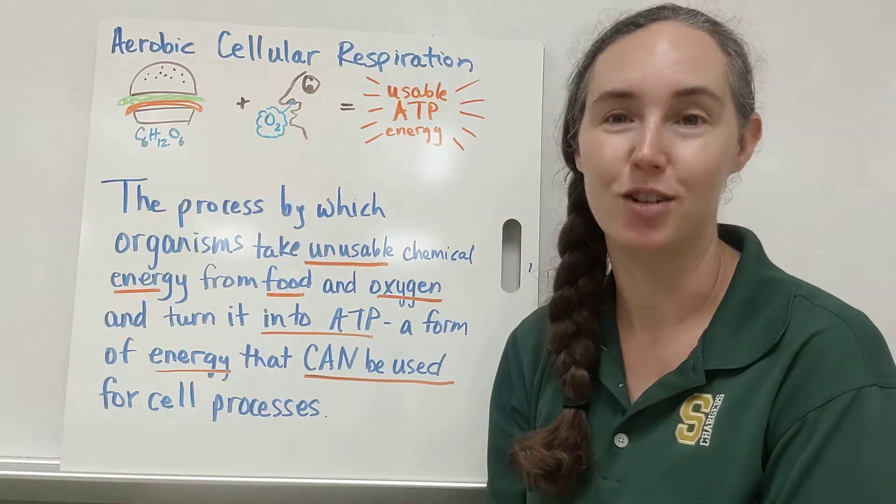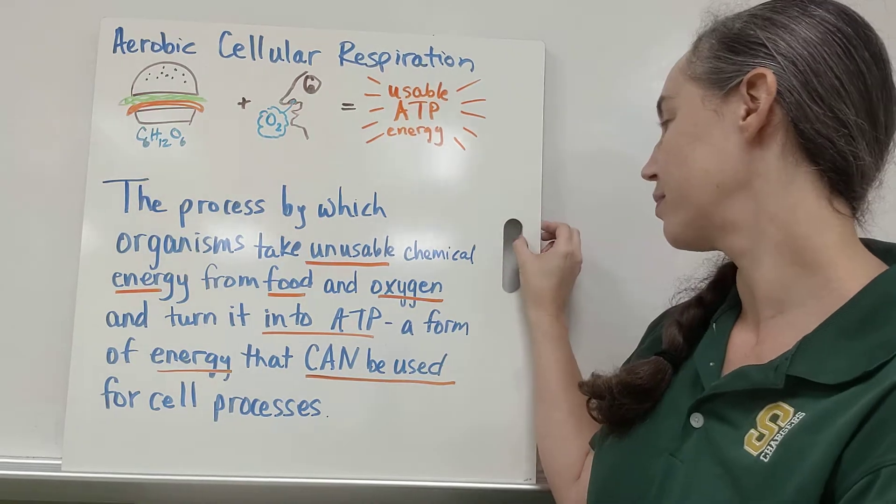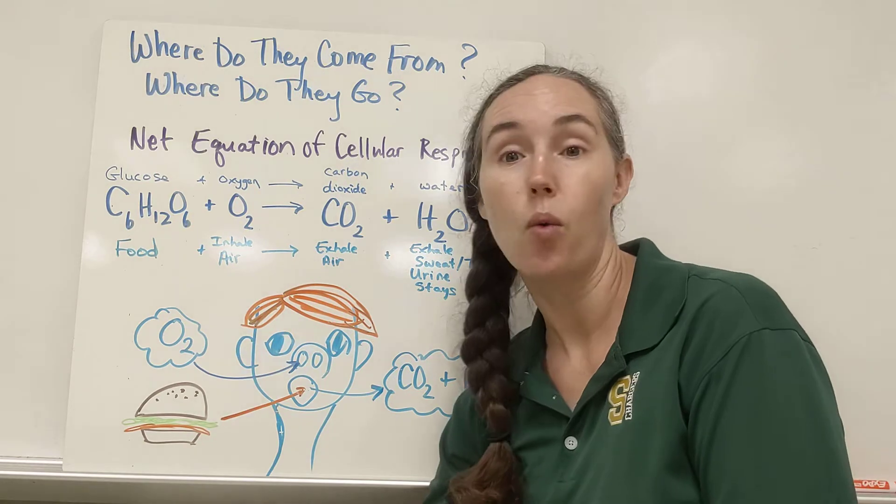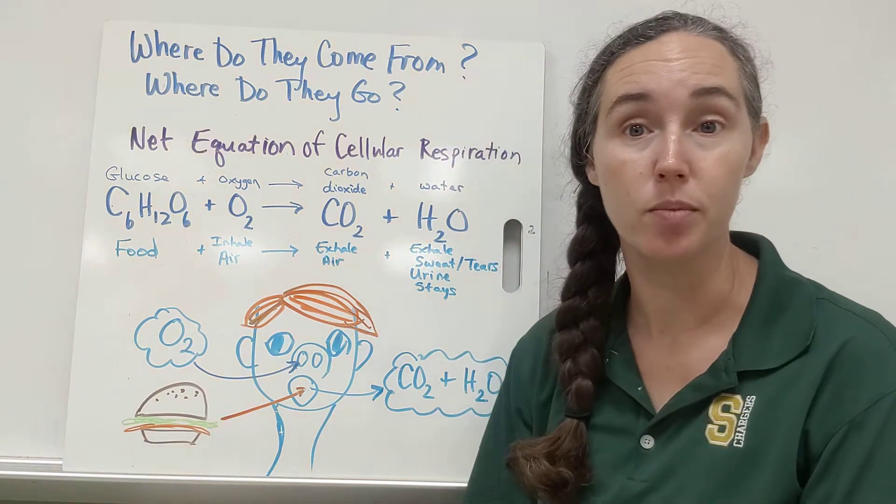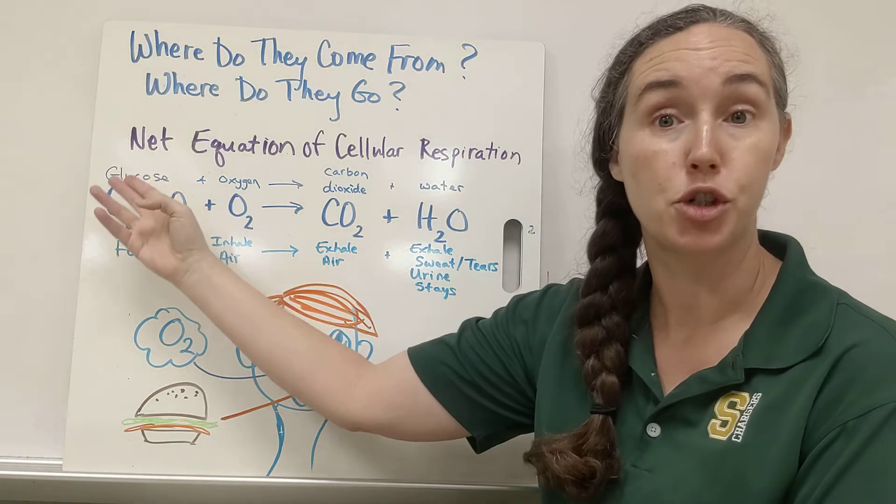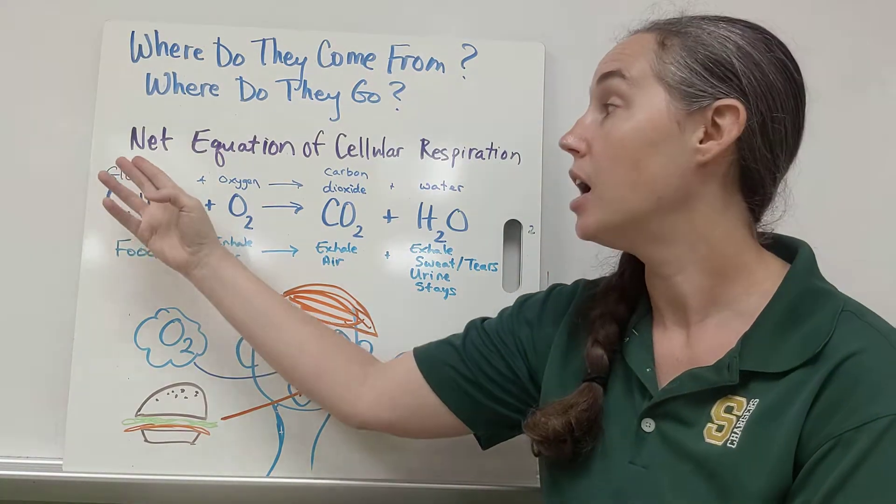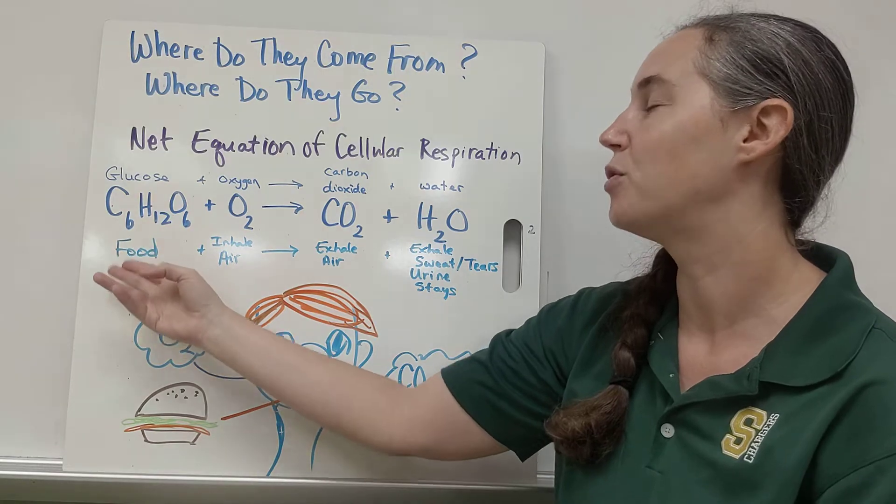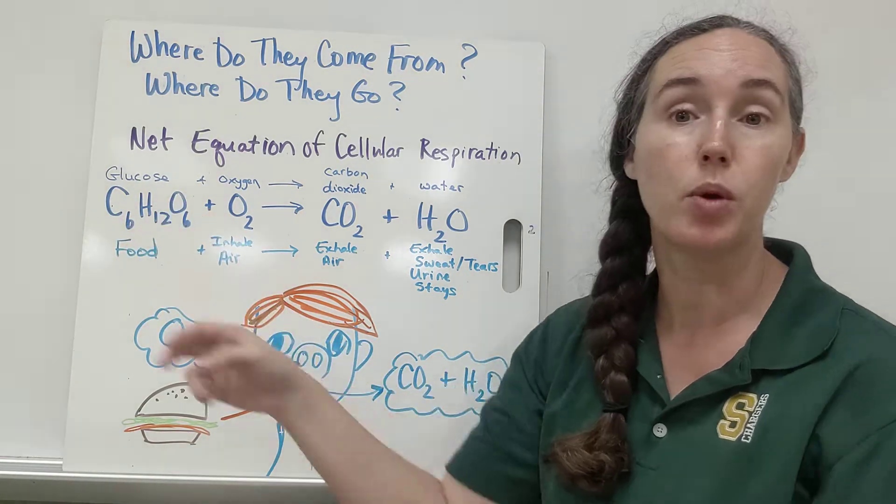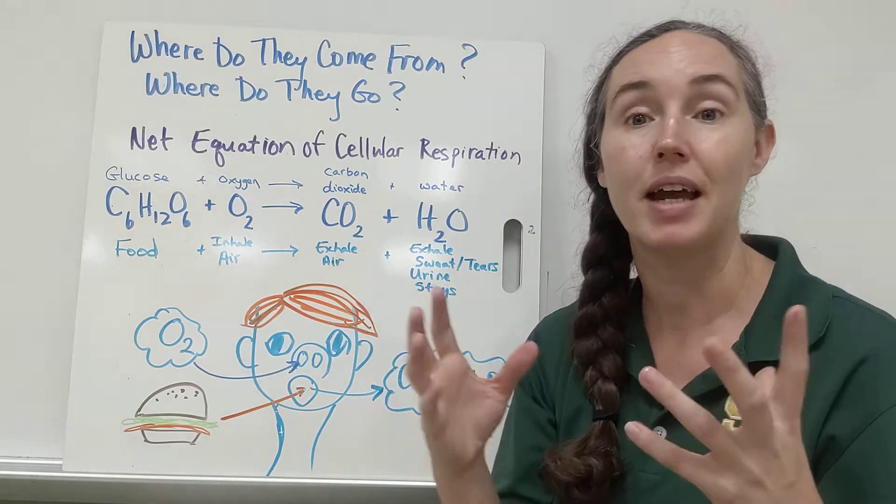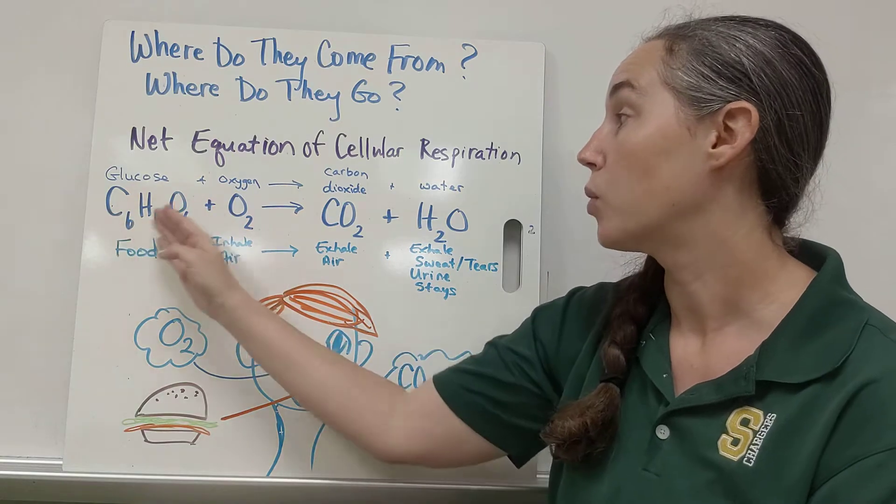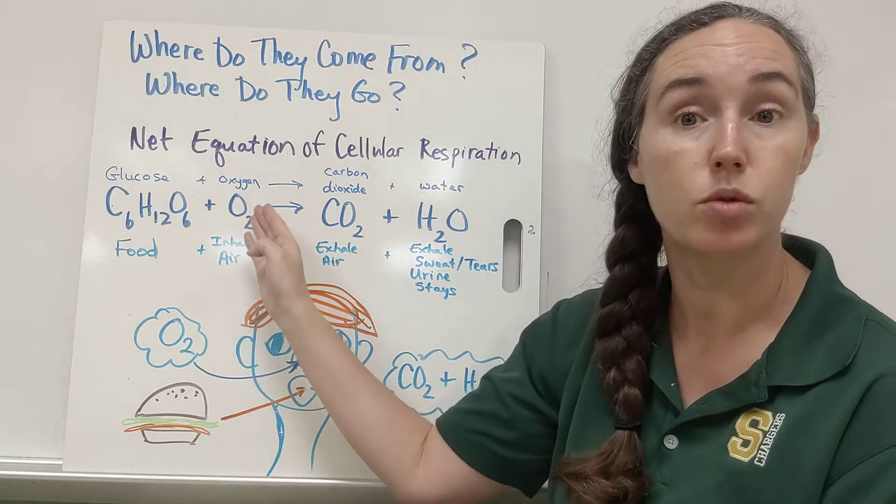Where do the reactants come from? Well, glucose, which is a sugar, a carbohydrate, comes from our food. Its chemical formula is C6H12O6. So anytime we break down carbohydrates, at the end of the day we're going to get the basic building block of carbs, glucose. Then we're going to take in oxygen O2.